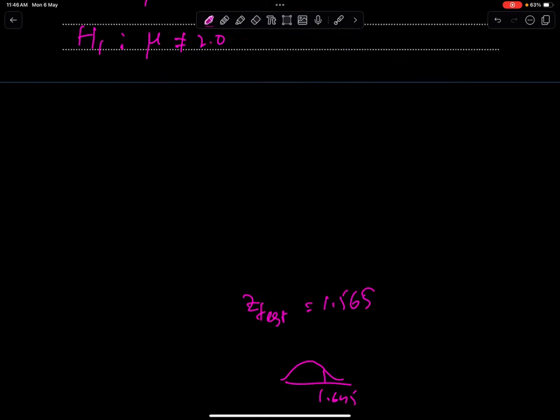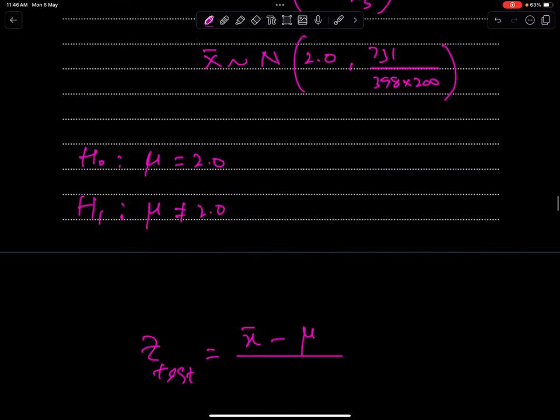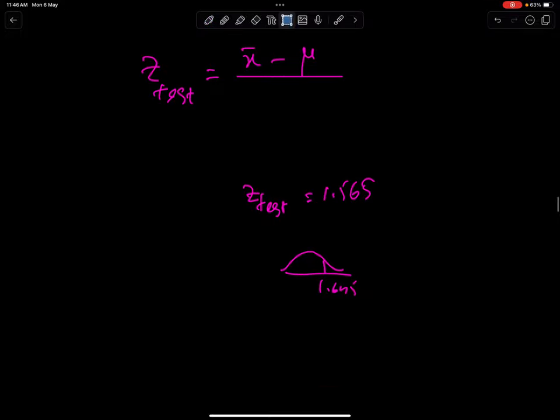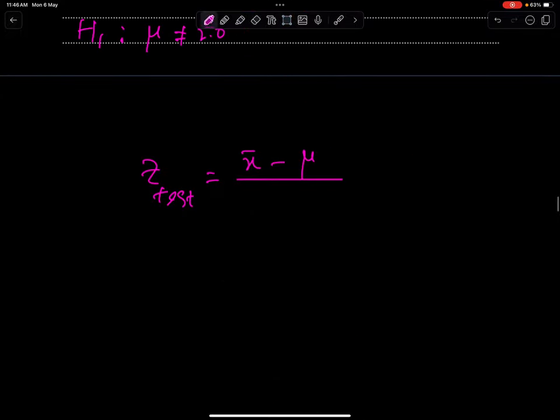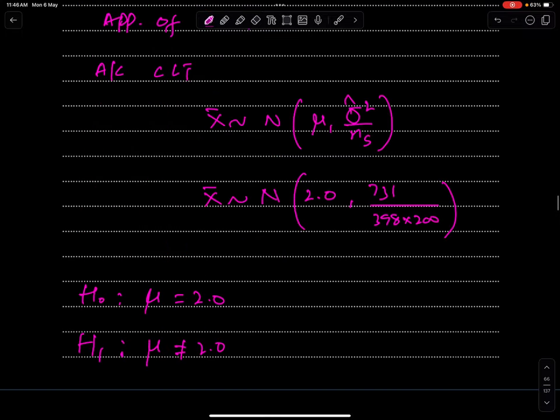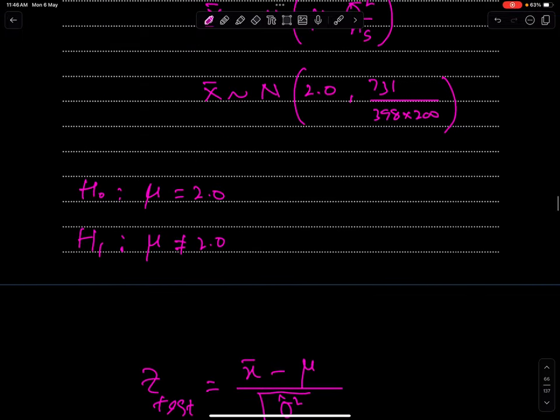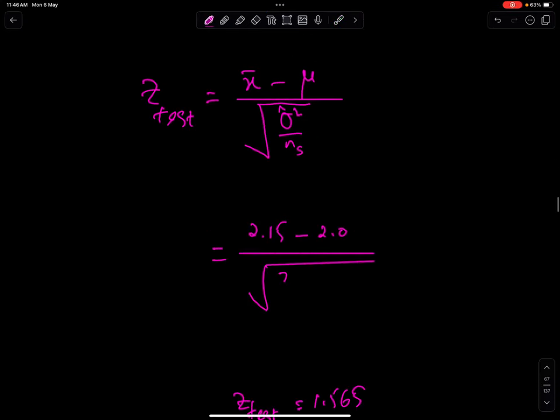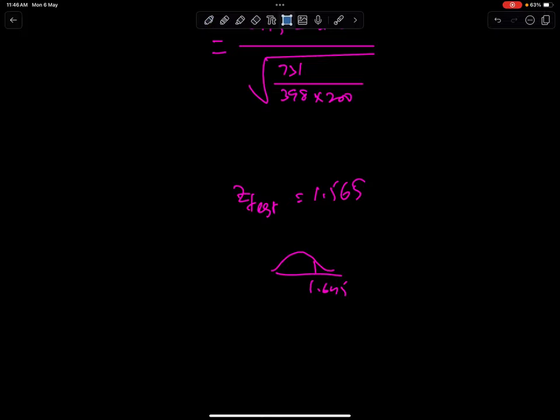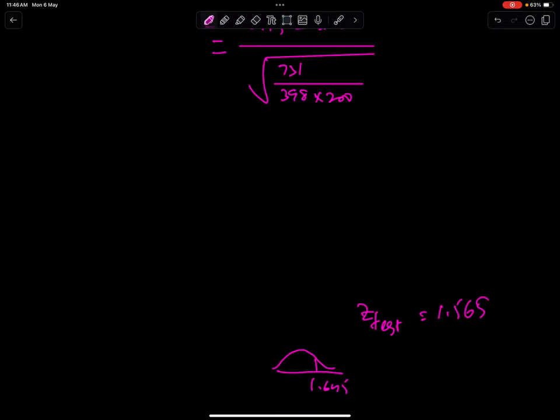Now we need Z test. This is the formula of Z test: x bar minus mu over square root of sigma cap square over n. So by substituting the values of all into this formula we have x bar is 2.15, mu is 2.0, and square root of 731 over 398 times 200. When we will solve this we will get 1.565. This is Z test.